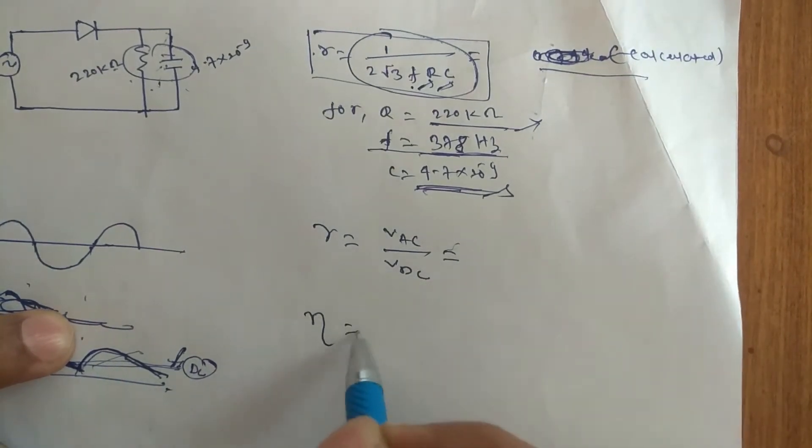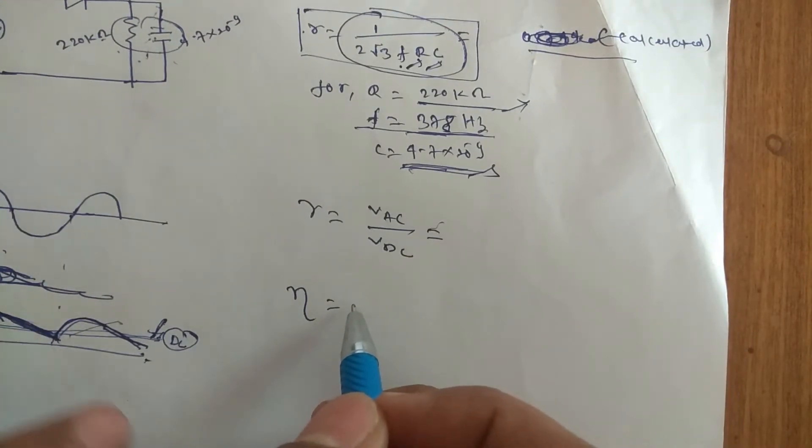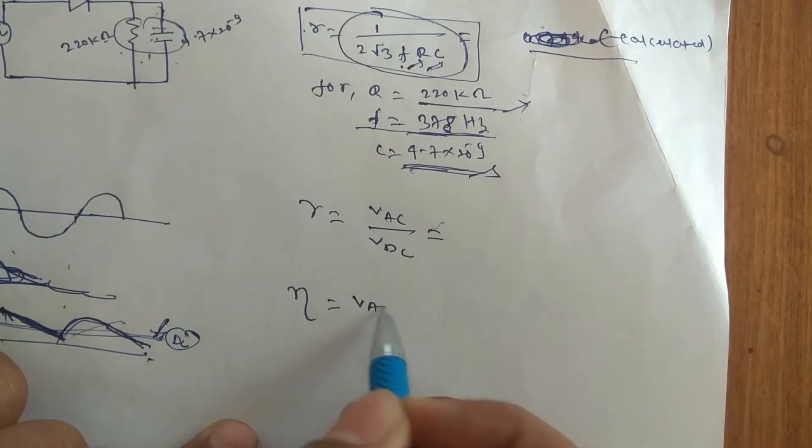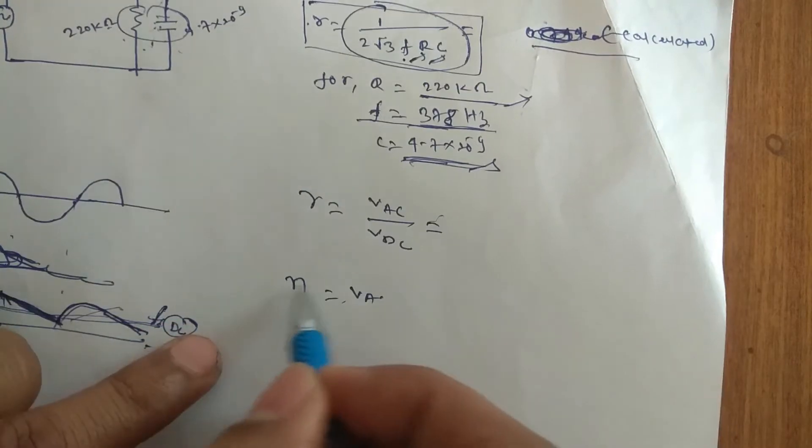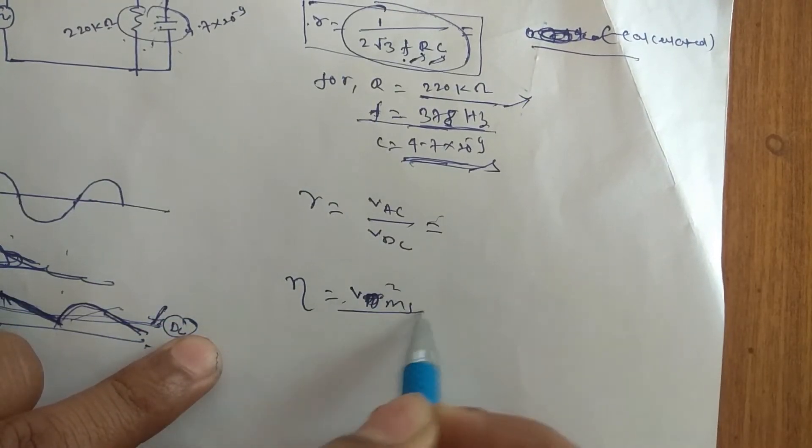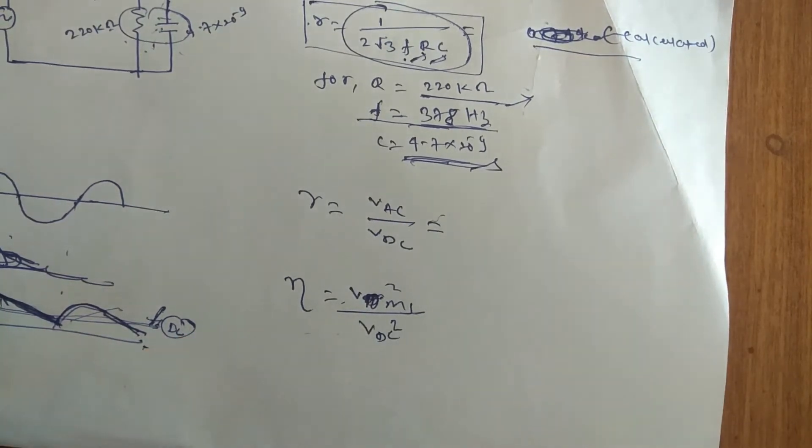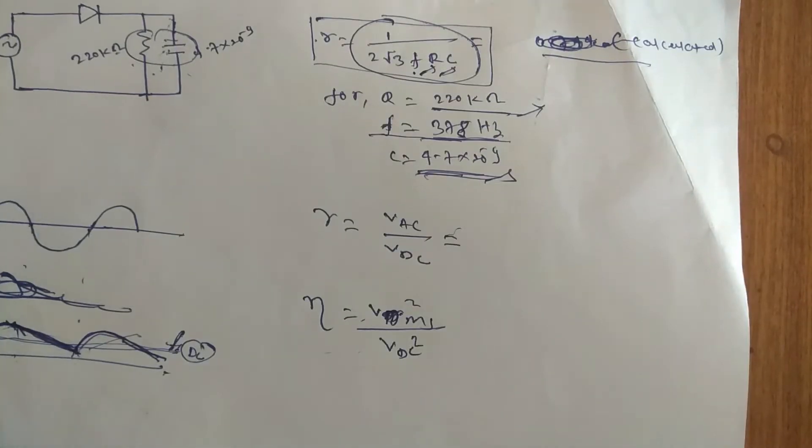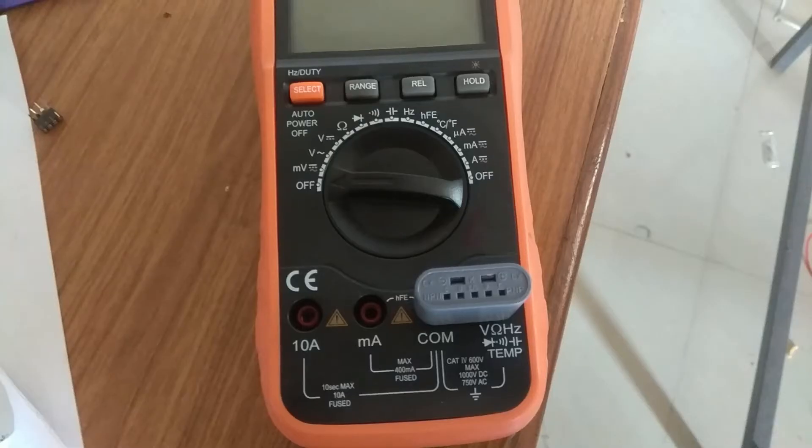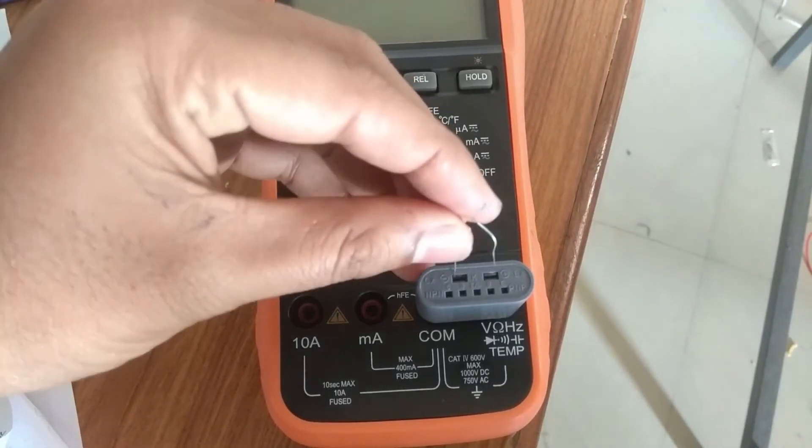We are going to calculate the efficiency with this improved version. That efficiency is VDC, that Vrms square by VDC square. This we are going to calculate. Now here we will learn how to measure the capacitor.